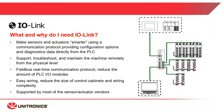IO-Link is an IEC standard communication protocol used for sensors and actuators. It is widely used in the industry by most sensor and actuator manufacturers. Using this technology, we can make sensors smarter and more informative than just binary or simple analog information sensors. For example, a simple IO-Link photo sensor can give us the element distance, the ambient temperature, and even the glass transparency of the sensor for maintenance reasons. We can also change the sensor operation mode directly via the PLC using the IO-Link communication.